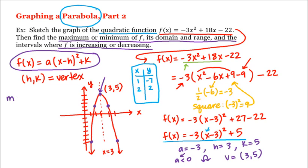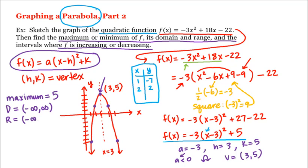The maximum value of our function is the y-coordinate of the vertex, which is 5. It occurs at x = 3, but the actual maximum value of the function is the y-coordinate, 5. The domain is all real numbers. The range is from that vertex down, or the interval from negative infinity up to 5, written as (-∞, 5].